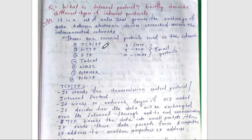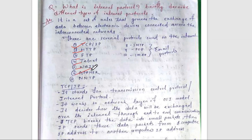There are several types of protocols used on the internet. They are: TCP/IP, HTTP, FTP, Telnet, WAIS, Gopher, NNTP, SMTP, POP, and IMAP. SMTP, POP, and IMAP are email protocols.